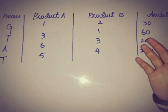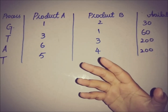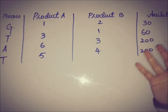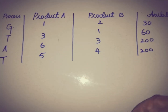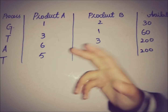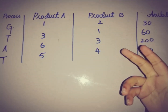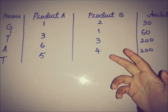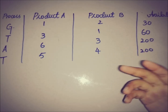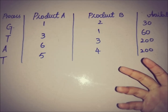The available hours at each operation are: a maximum of 30 hours for grinding, 60 hours for turning, and 200 hours each for assembling and testing. The contribution to profit is 2 rupees for each unit of Product A and 3 rupees for each unit of Product B, and the firm can sell all that it produces at prevailing market prices.